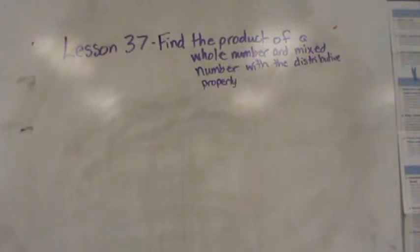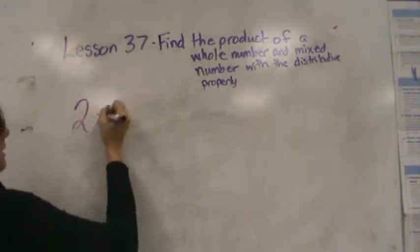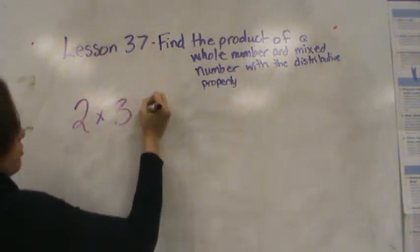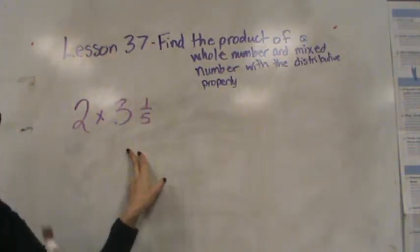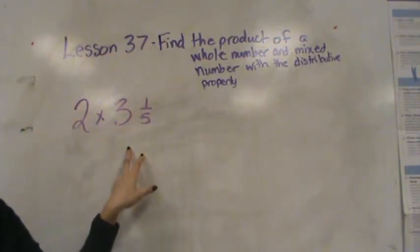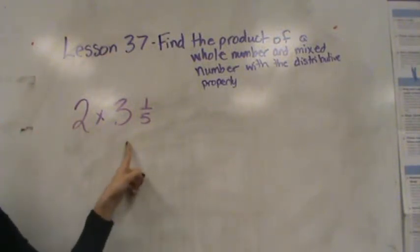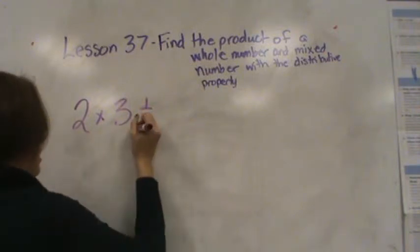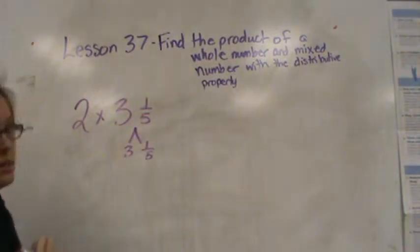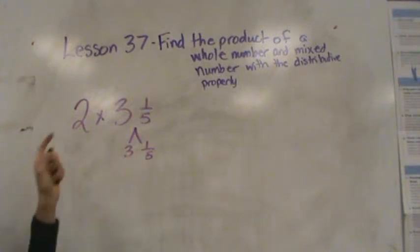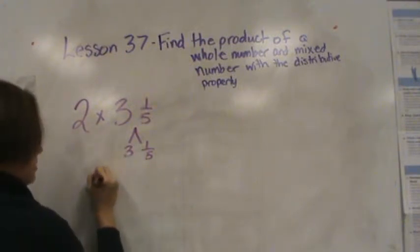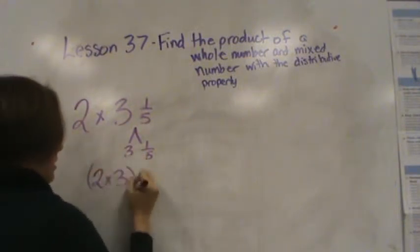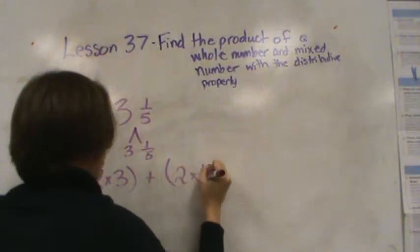I want to do 2 times 3 and 1 fifth. So just like I broke up the 14 into 10 and 4, I'm going to break up the 3 and 1 fifth into 3 and 1 fifth. 3 plus 1 fifth is 3 and 1 fifth. Now let's multiply. I'm going to multiply both of these numbers times 2. So 2 times 3 plus 2 times 1 fifth.